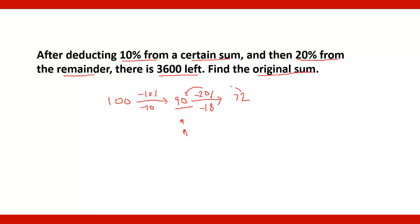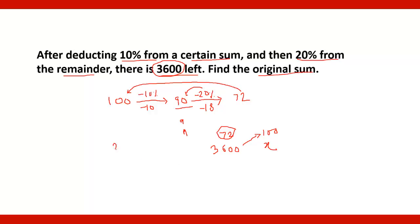So when the result is 72, the original number is 100. When the result is 3600, since this is a direct variation, cross multiply: 3600 multiplied by 100 divided by 72. If you solve this, you get 5000. So the original sum is 5000.